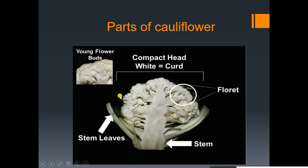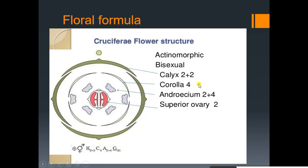Now we see the parts of cauliflower with images: stem, leaves, florets, compact head with white curd, and long flower bud. These are the parts of the cauliflower shown in the image.